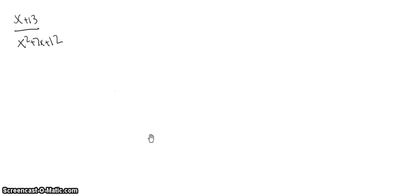And so what this looks like, well first we need to factor the denominator. And so we have x squared plus 3x plus 4x plus 12, and then this can be grouped.